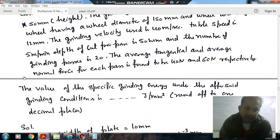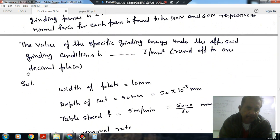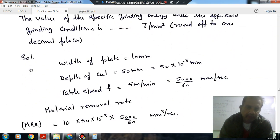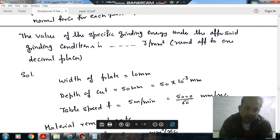The value of specific grinding energy under the aforesaid grinding condition is blank joule per cubic mm, round off to one decimal place. Solution: The width of plate is 100mm, depth of cut is 50 micrometers which is 50 times 10 to the minus 3 mm, and the table speed is 5m per minute or 5000 by 60 mm per second.